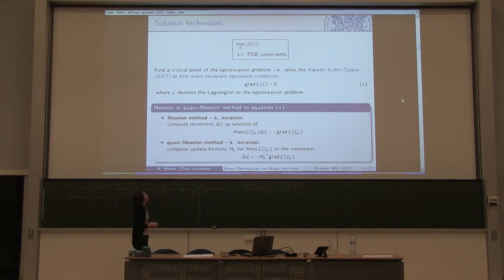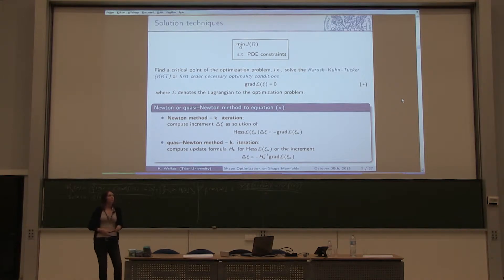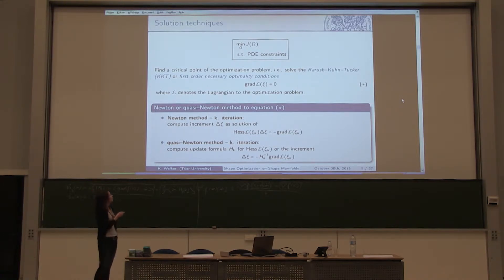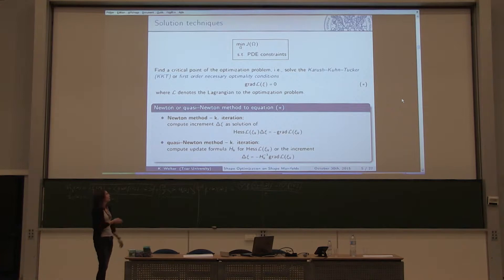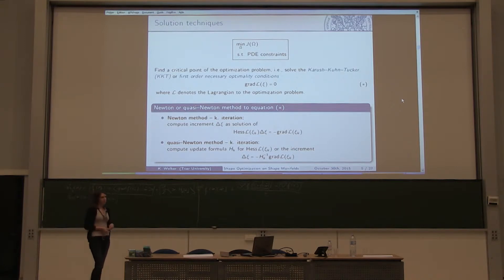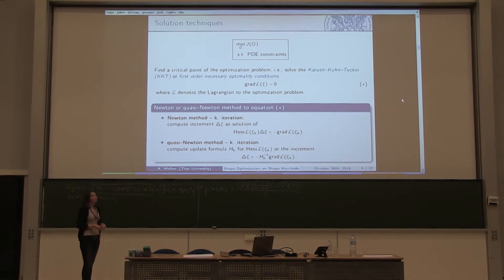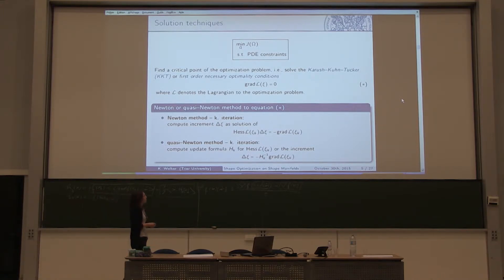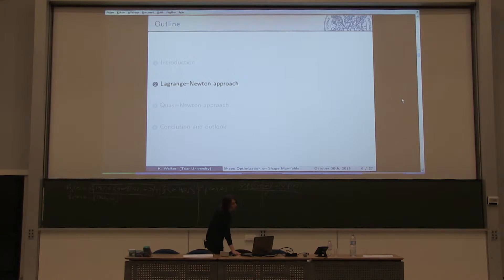Now we want to solve our minimization problem. One approach is to consider the necessary first-order optimality conditions given by the equation star, where L denotes the Lagrangian to our minimization problem. We can solve these conditions by applying a Newton method or a quasi-Newton method. The difference is that in each Newton iteration we use the Hessian, while the quasi-Newton method uses an approximation of it. This leads to the first part of the talk: the Lagrange-Newton approach.